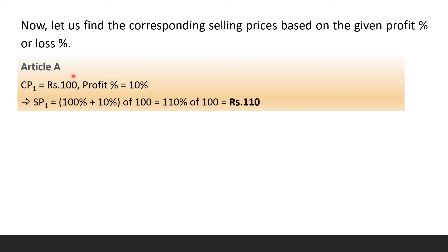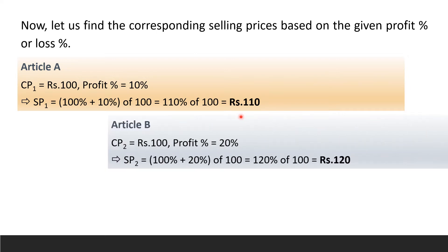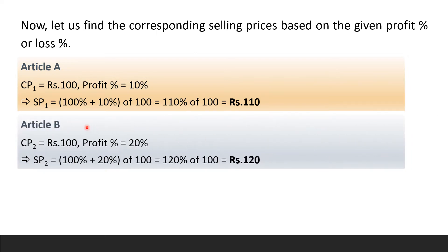Now let us find the corresponding selling prices based on the given profit or loss percentage. Article A has a cost price of Rs 100 and a profit of 10%. In case of profit, the selling price equals cost price plus profit. Therefore, selling price of Article A, SP1, equals 100% plus 10% of Rs 100, that is 110% of Rs 100, which equals Rs 110.